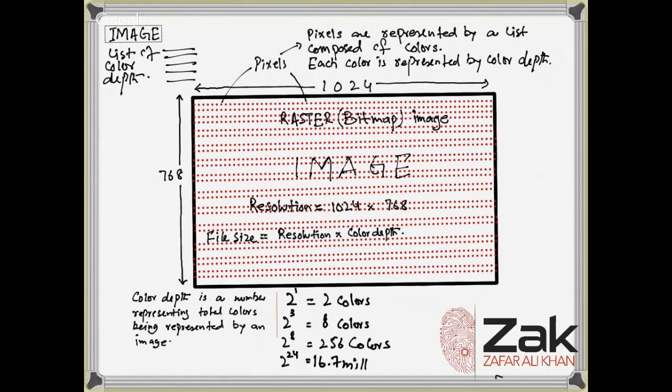So again, what is color depth? The number of bits utilized by each pixel to represent a color is called what? Color depth. Every pixel is having a color.